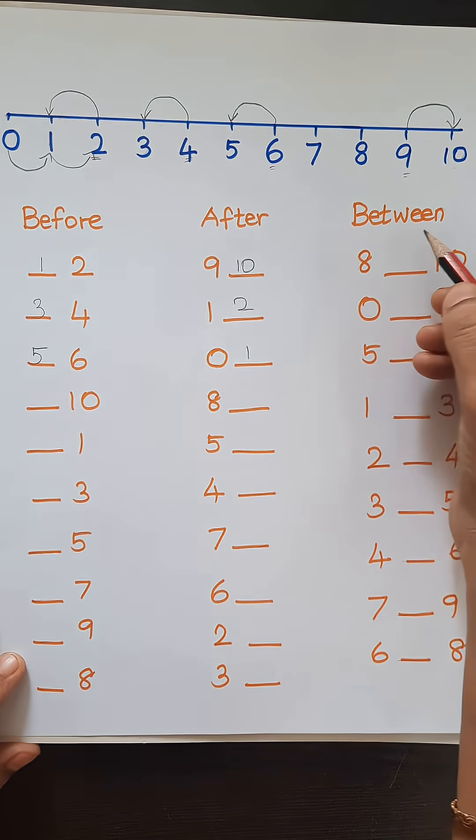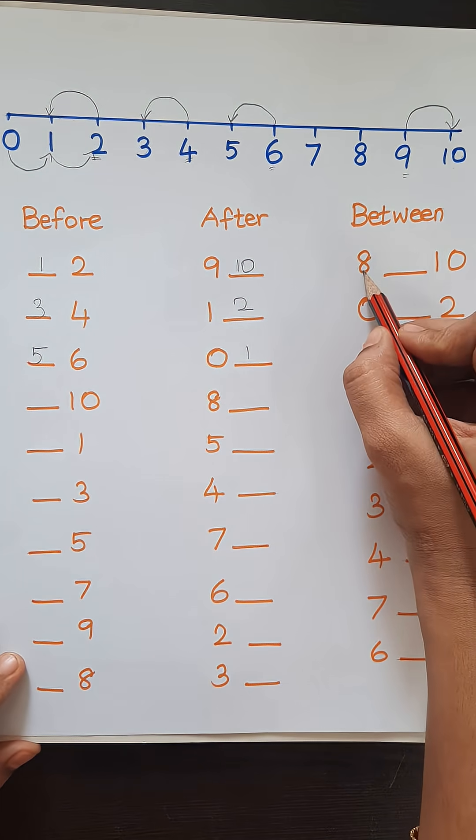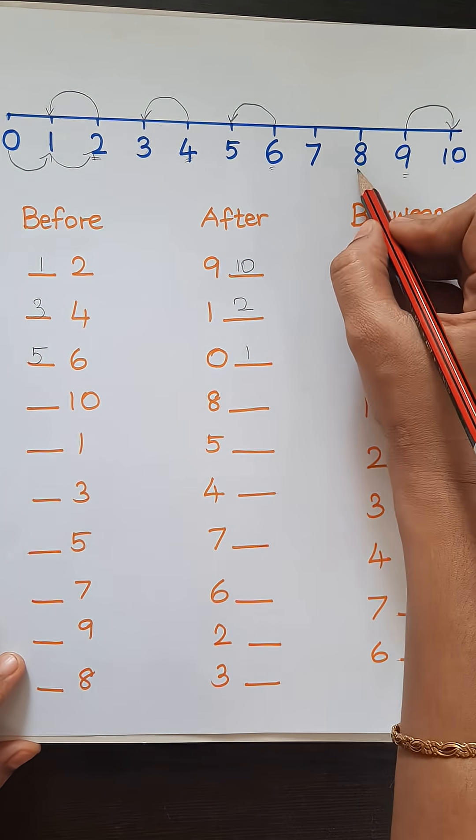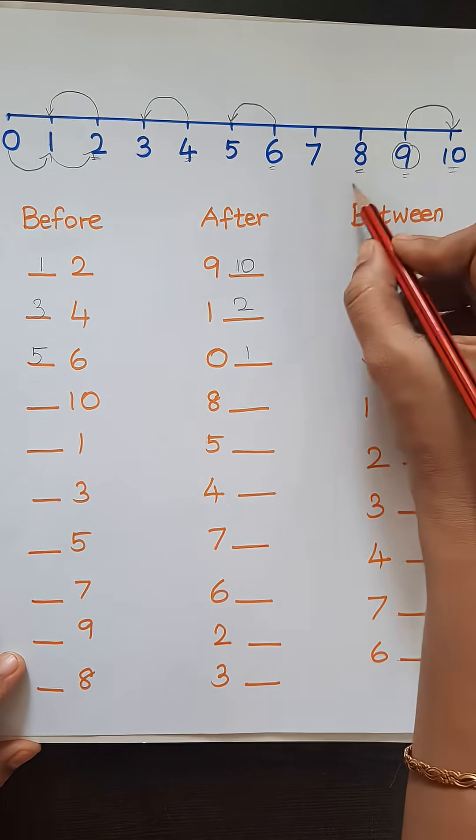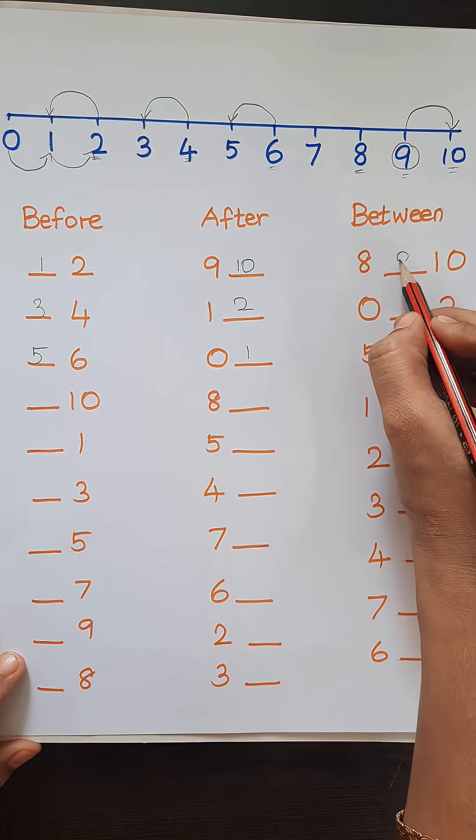So next one is between. So what comes in between 8 and 10? So 8 is here. 10 is here. So what comes between 8 and 10? 9. So we will write 9.